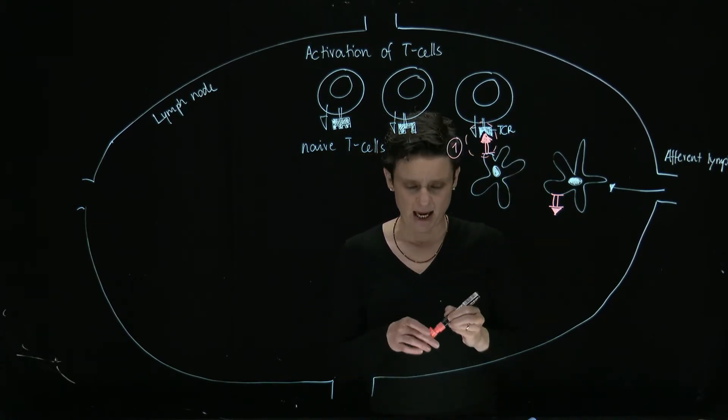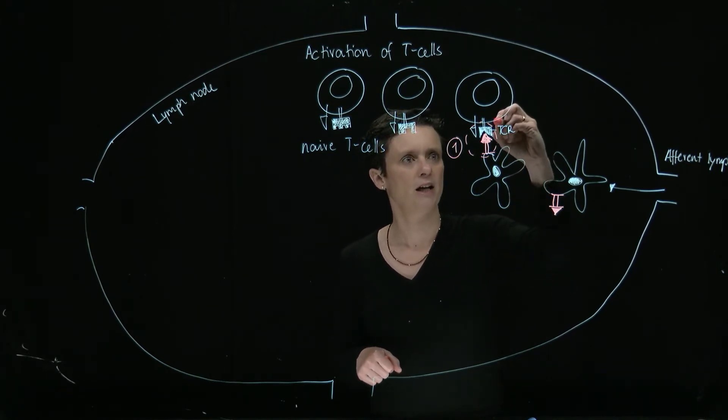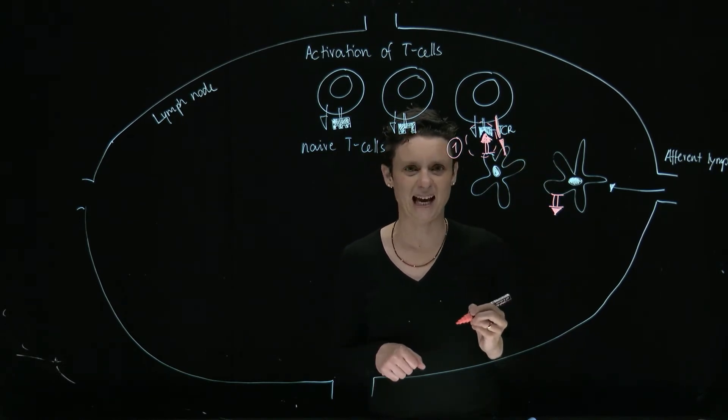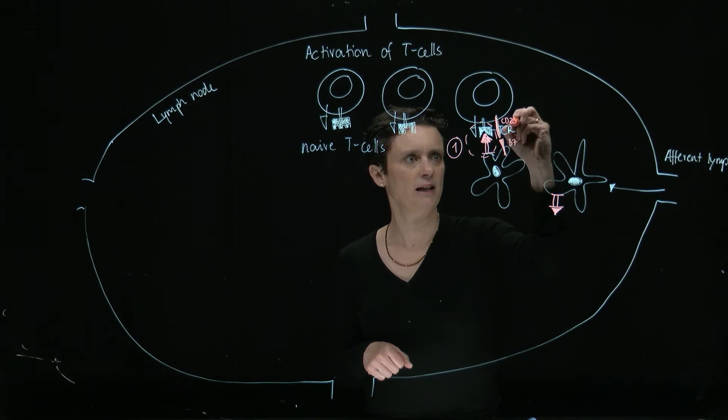And then there's also a signal two, which are some co-stimulatory molecules. So there is peptides expressed on the T cell and some expressed on the dendritic cell that interact with each other, that's called co-stimulation, it's normally B7 on the dendritic cell and CD28 on the T cell, and that's going to be signal two.